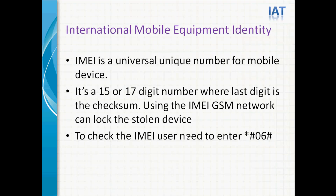International Mobile Equipment Identity — IMEI is a universal unit number for a mobile device. It is a 15 or 17-digit number, where the last digit is the checksum. Using the IMEI, the GSM network can lock a stolen device. To check the IMEI, the user needs to enter *#06# on the device — on the display, they will see the IMEI of the device.